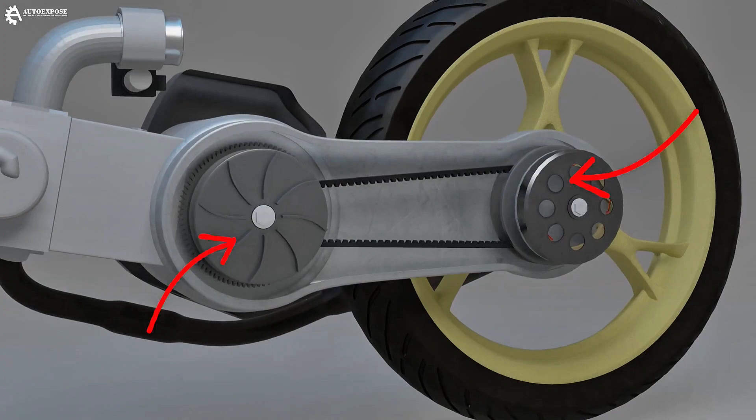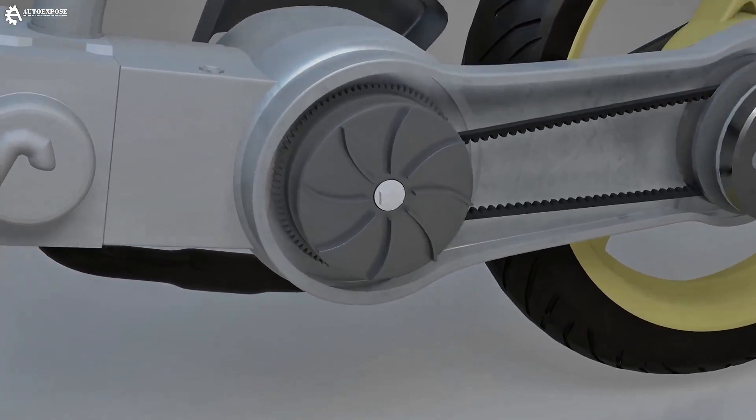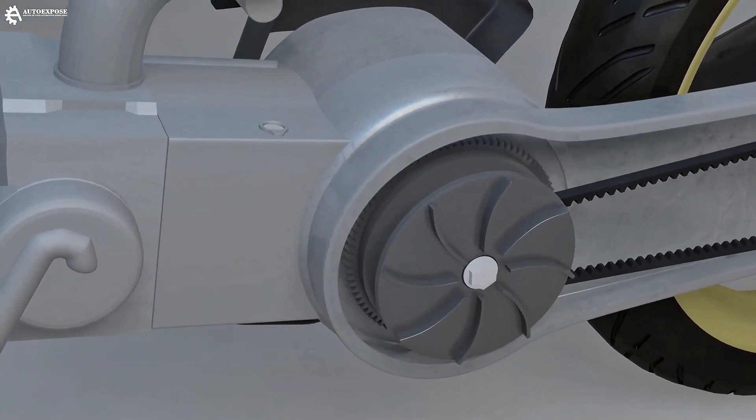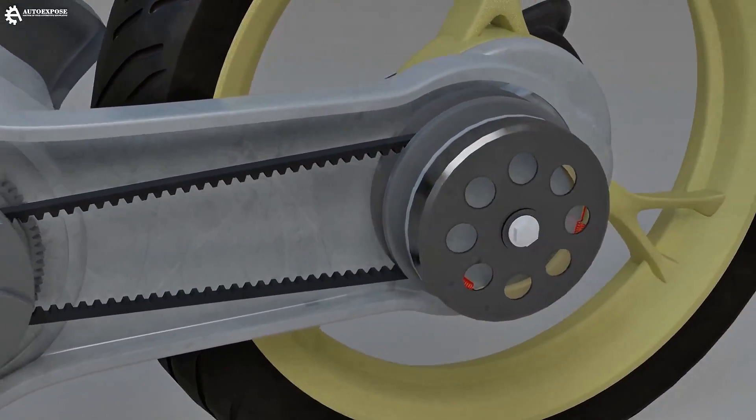Here, there are two pulleys connected by a rubber belt. The front pulley is connected to the engine, so it rotates every time the engine is running. Let's focus on the rear pulley. Here, there's the clutch.